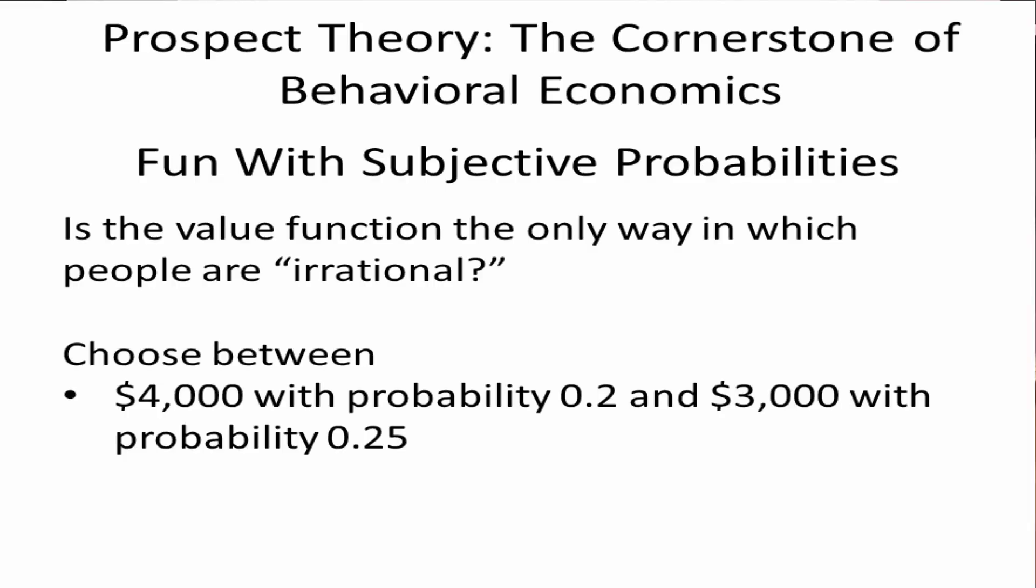Would you rather have, this is obviously a worse set of options. You don't like this one as much. $4,000, probability 0.2, zero with probability 0.8, obviously. That's how probabilities work. Or, you can have $3,000 with probability 0.25, and zero with probability 0.75.